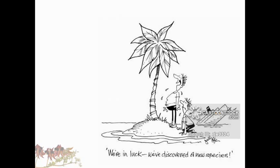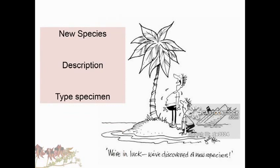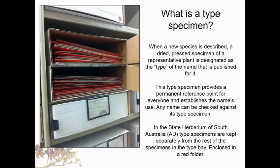Moving on from Graham, we're looking at a subset of those collections - specifically new species. When we find new species, we produce a description and also a type specimen. When we describe a new species, that dried pressed specimen of a representative plant is designated as a type, which is a permanent reference point for any name of a new species.